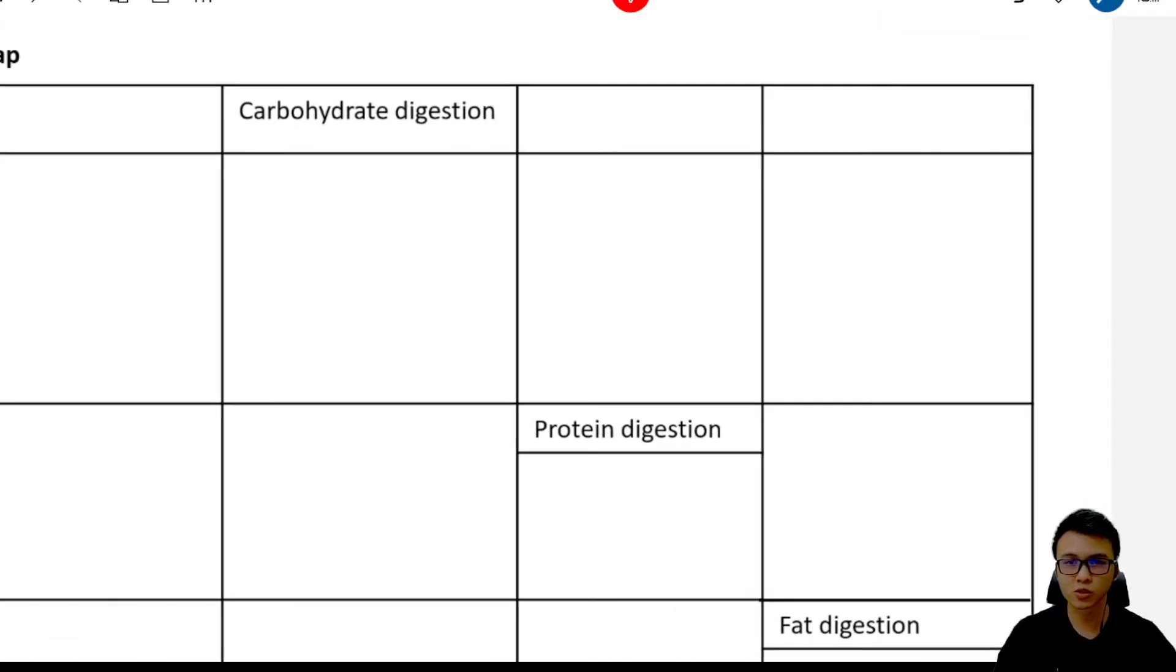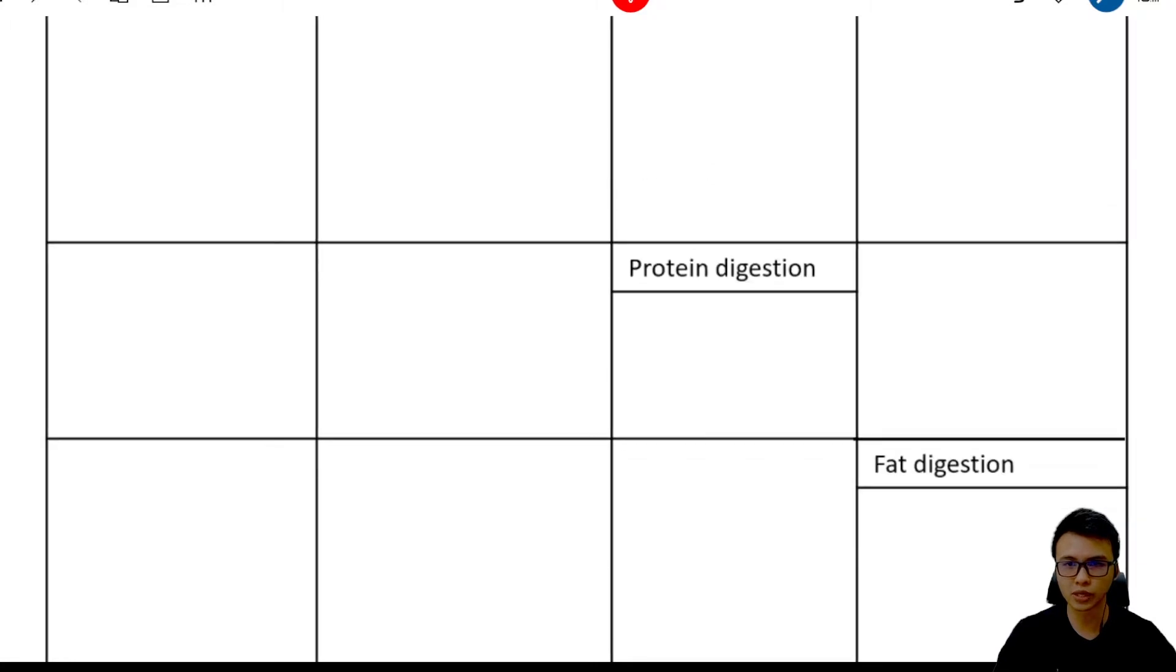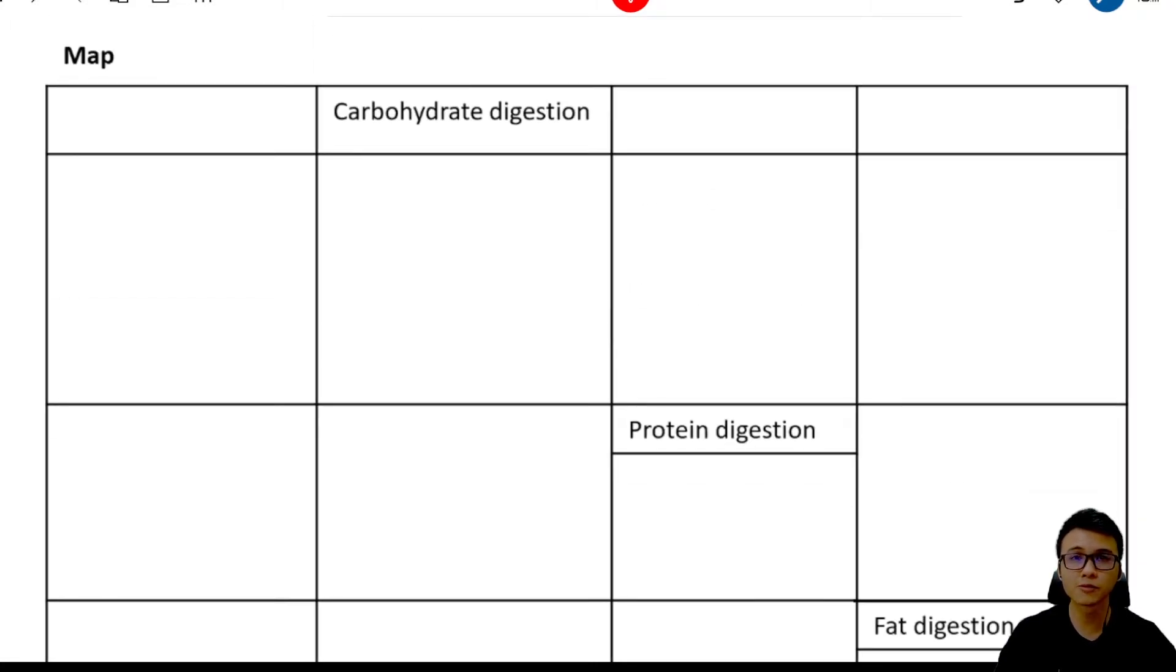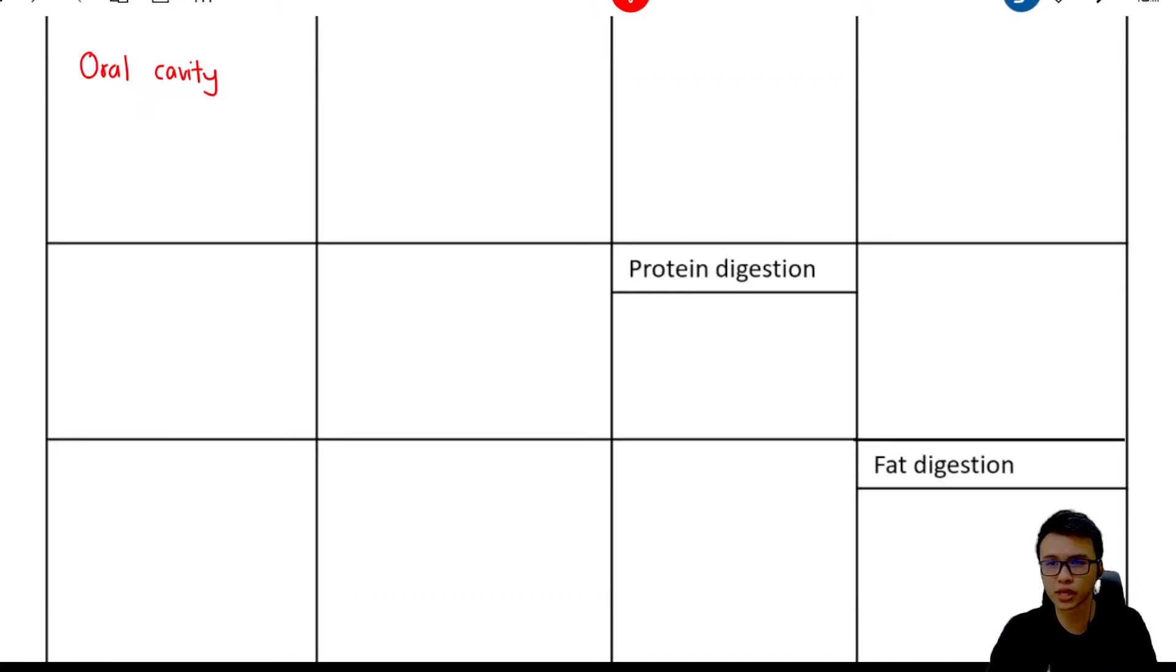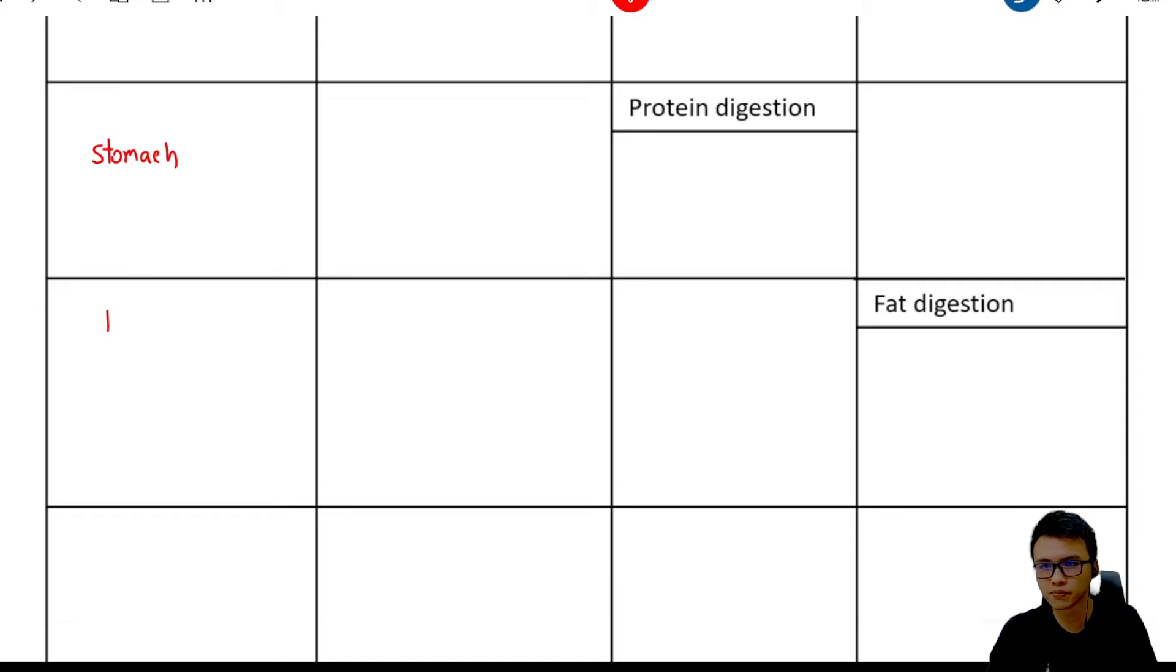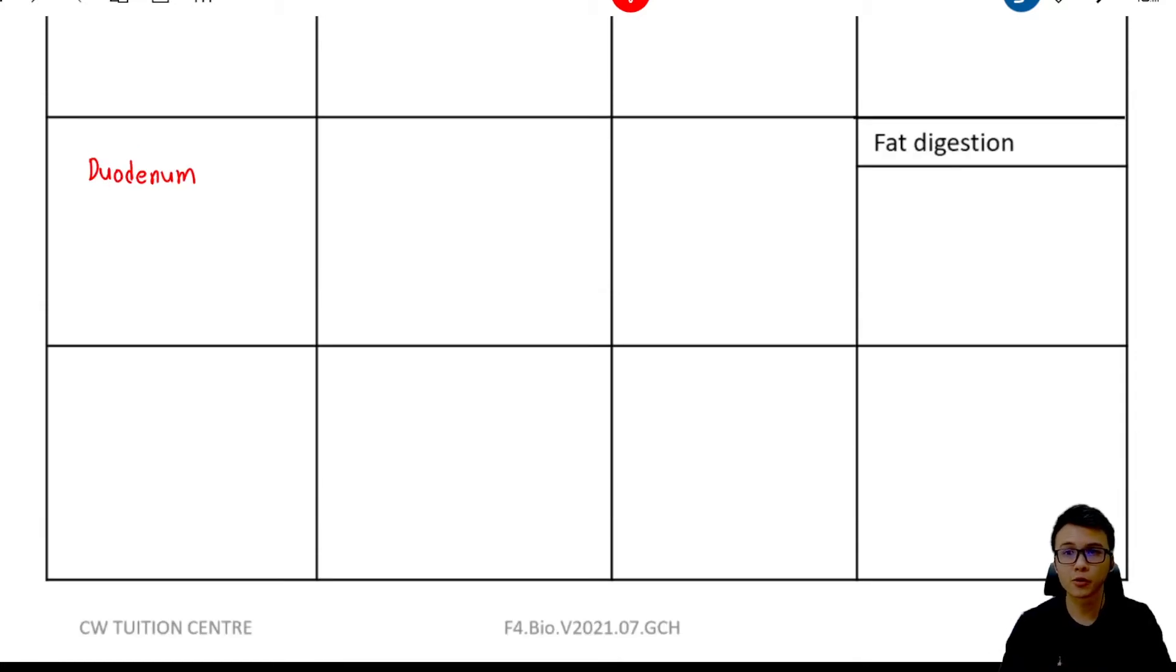The first thing you need to do is draw out this table. This table has four columns and five rows. In the first column, we are going to write down all the organs that involve enzyme digestion. The first organ is the oral cavity, the second row will be our stomach, followed by duodenum. And remember, duodenum is part of the small intestine. It is the first part of the small intestine.